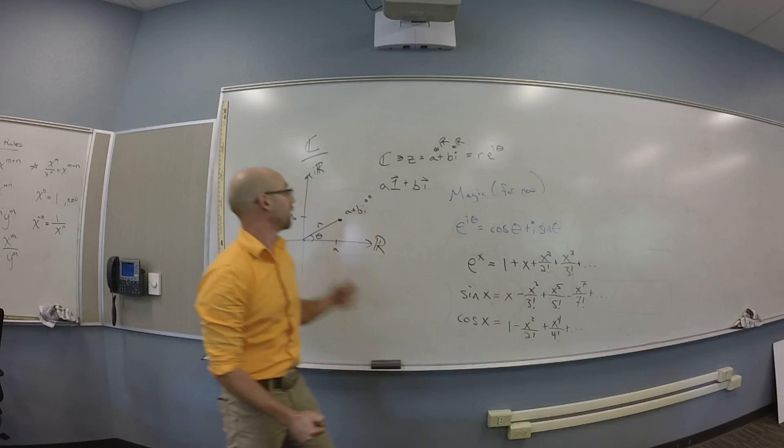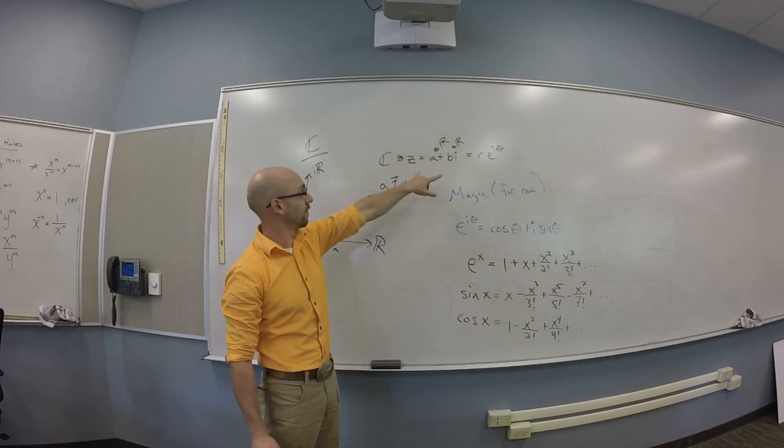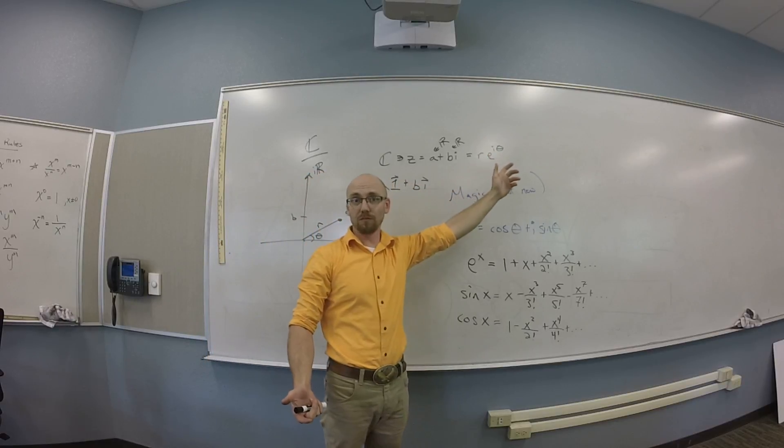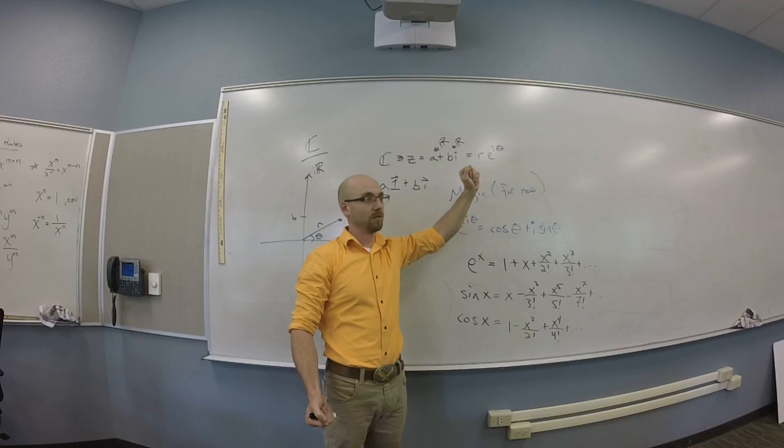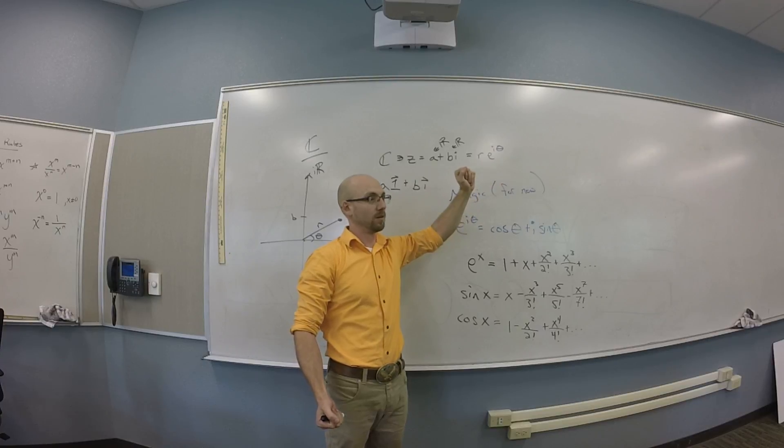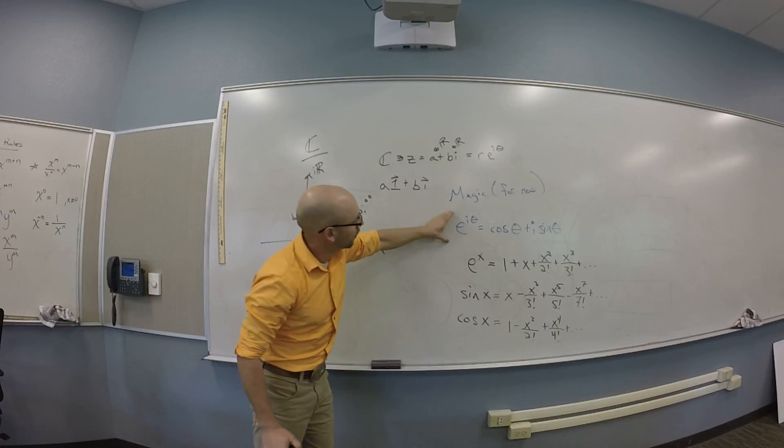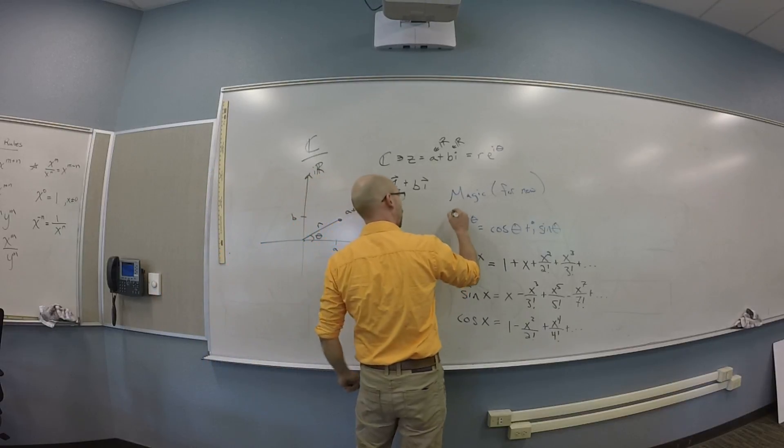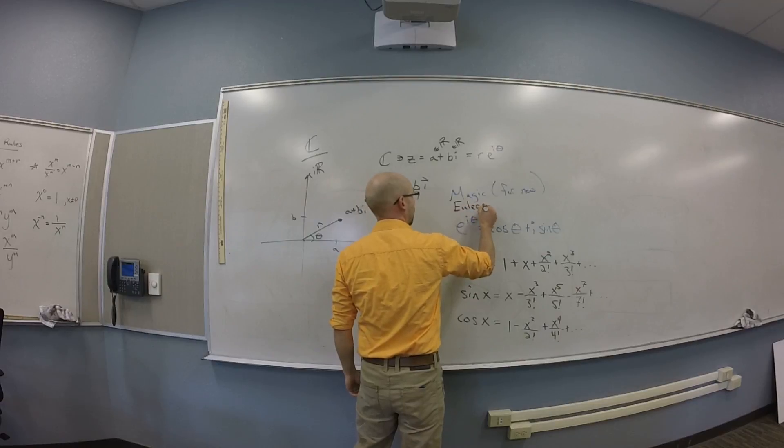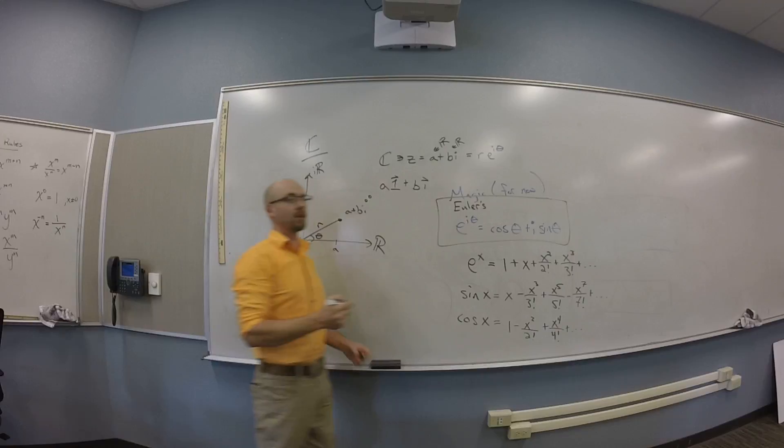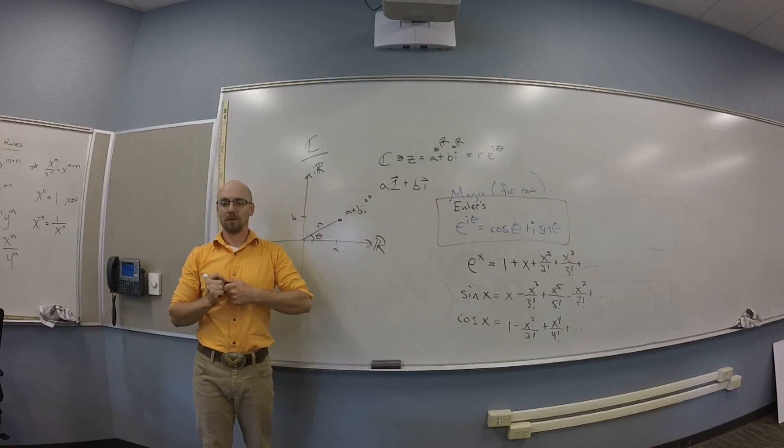Okay. So the things I want you to know are this. You can get the R and the theta, right, with the usual conversions. You guys see that? Okay. I want you to know this thing. This is Euler's identity or Euler's formula depending on who you ask. Cool.